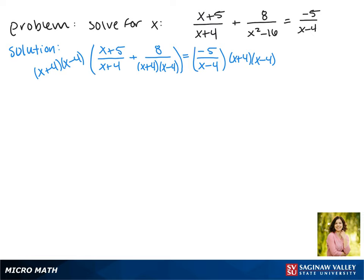So on the left when we multiply this whole quantity by the first term, the (x+4) will cancel, leaving us with the quantity (x+5)(x-4). On the second term, the denominator will cancel completely, leaving us with just 8. And on the right, the (x-4)s will cancel, leaving us with -5(x+4).